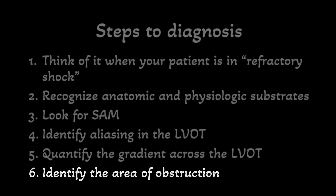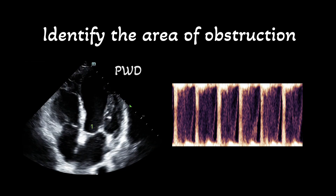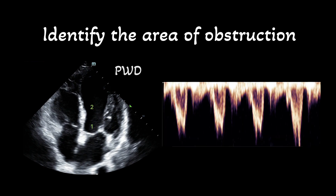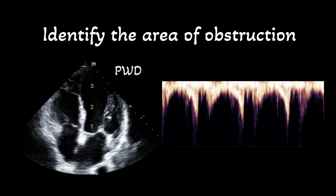Finally, identify where the obstruction is occurring — whether it is at the LVOT or somewhere in the mid-cavity of the left ventricle. To do so, walk your pulse wave Doppler signal up the LV. Start at the LVOT; as you can see here, the pulse wave Doppler tracing shows aliasing, demonstrating high velocities and obstruction. In the mid-cavity, the pulse wave Doppler signal shows a clear envelope, indicating normal velocity flow. At the apex, the pulse wave Doppler signal also does not demonstrate aliasing. Thus, the area of obstruction in this case was at the LVOT.